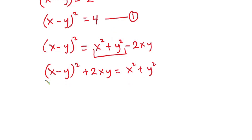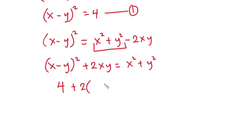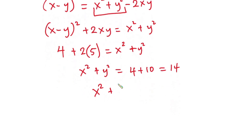From equation 1, we know this whole thing to be 4. So we have 4 plus 2 times xy, and we know xy from this equation to be 5. So this implies that x to the 2nd power plus y to the 2nd power is equal to 4 plus 2 times 5, which is 10, and this is equal to 14. So x squared plus y squared is equal to 14.